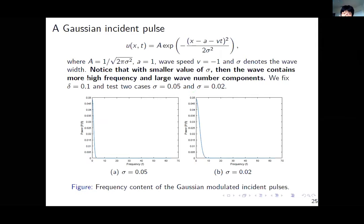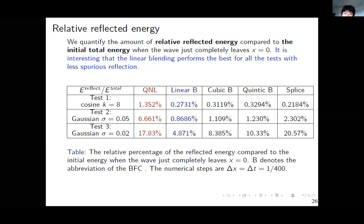The next example is a Gaussian incident pulse, which contains multiple wave number components. When the Gaussian pulse width is small, say sigma equal to 0.2, we have more components in the wave number. We compute the relative reflected energy of all coupling methods. The cosine non-local overall performs the worst and the linear blending overall performs the best. At wave number 8, linear and splice are relatively equal, but for larger wave numbers splice is much worse than linear blending.